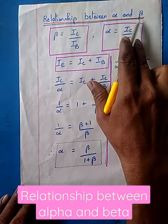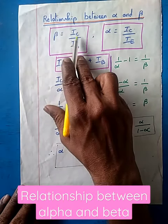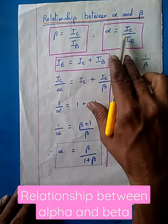Relationship between alpha and beta. Beta equals Ic by Ib. Alpha equals Ic by Ie.